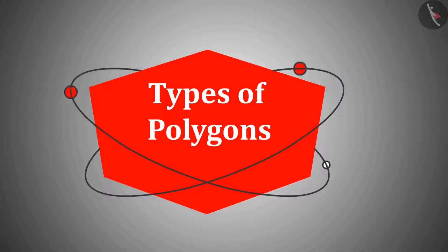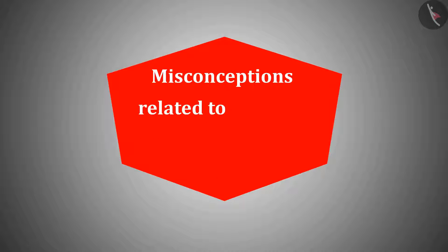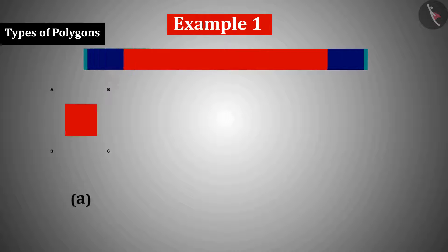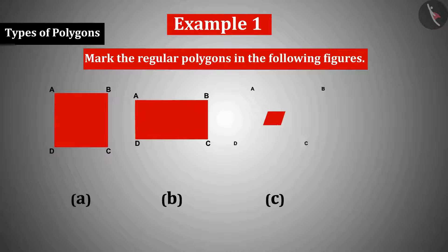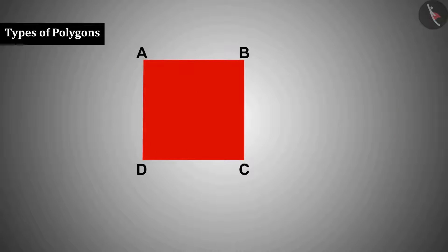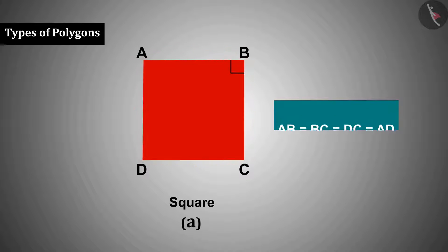Welcome to this video. Today we will understand the misconceptions related to different types of polygons. Example 1: Mark the regular polygons. Polygon A is a square — all sides are equal and all angles are equal — so it is a regular polygon.